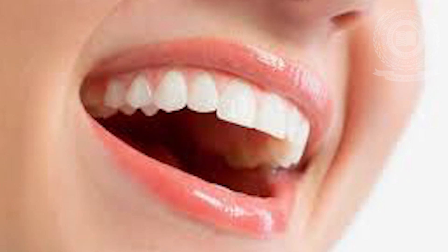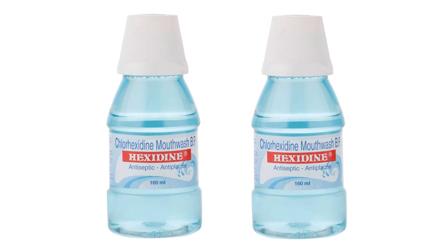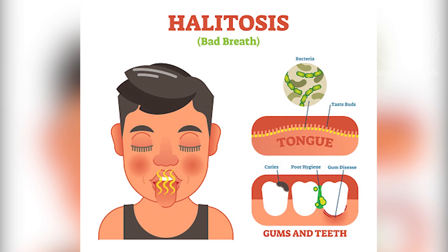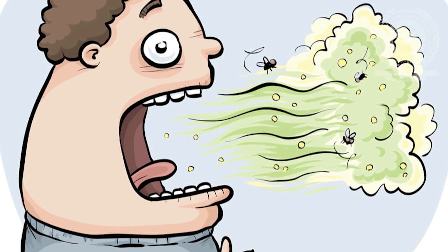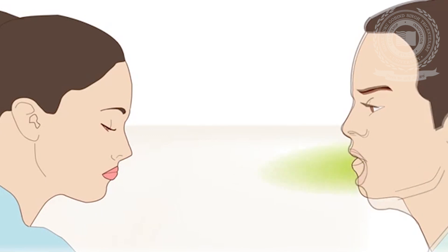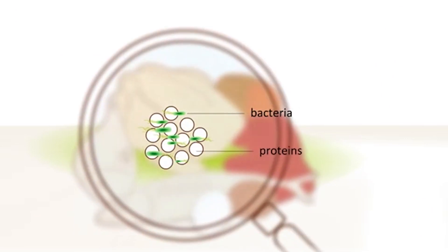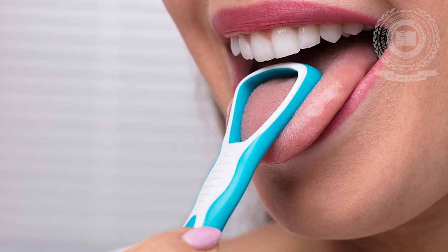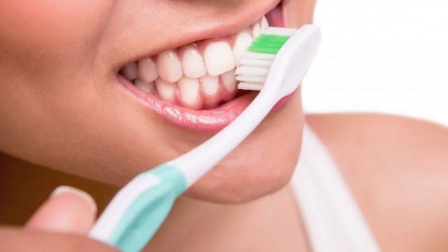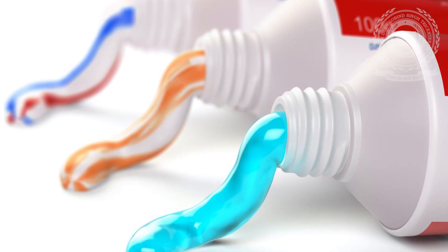To date, mouth rinses containing chlorhexidine remain the gold standard of anti-plaque agents. The problem of halitosis is certainly a major stigma for many individuals, although it is considered a cosmetic nuisance. In most individuals, the microbial degradation of organic substances in the mouth results in the production of volatile sulfur compounds such as hydrogen sulfide and methyl mercaptan, resulting in halitosis.